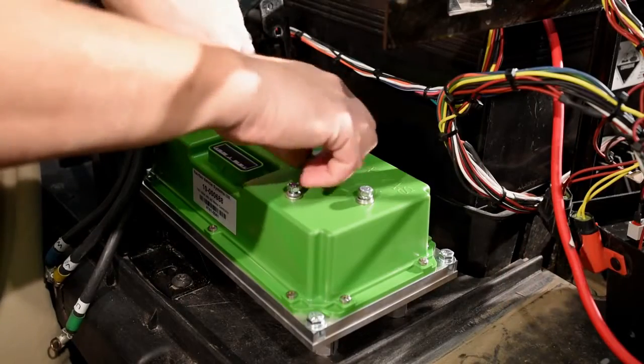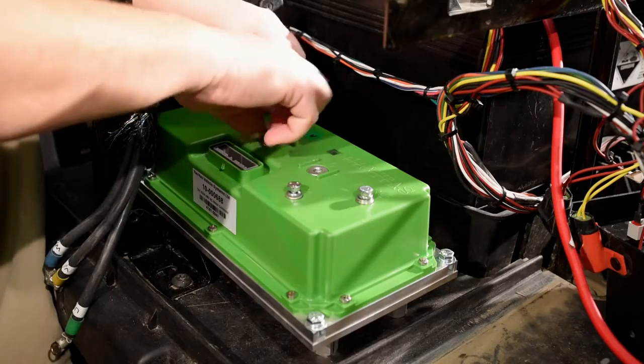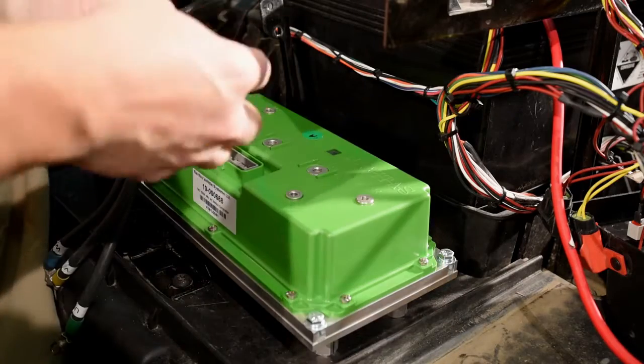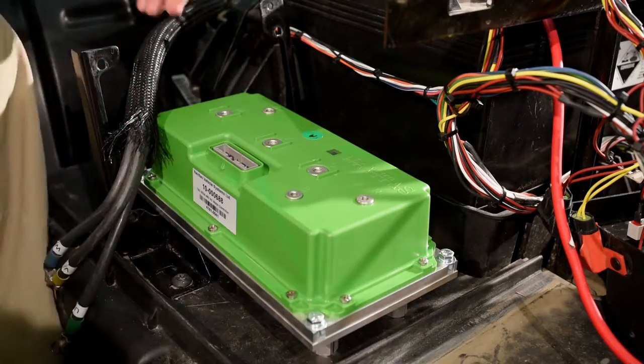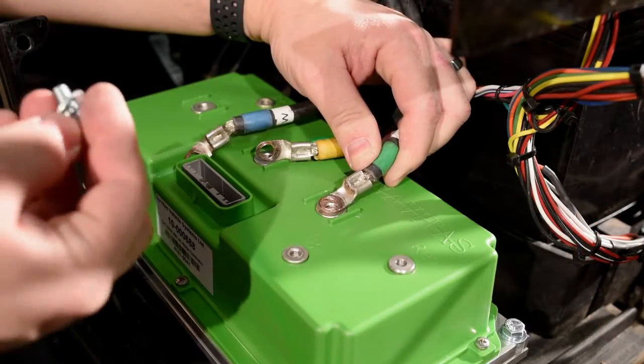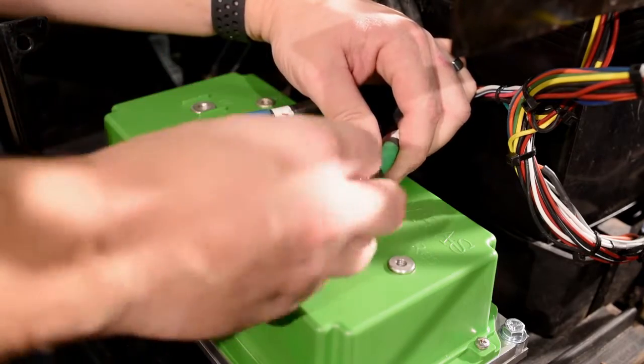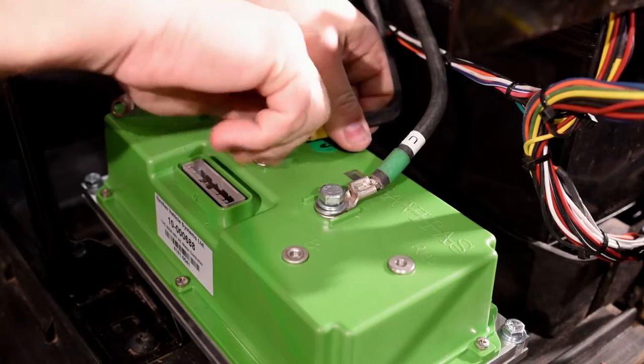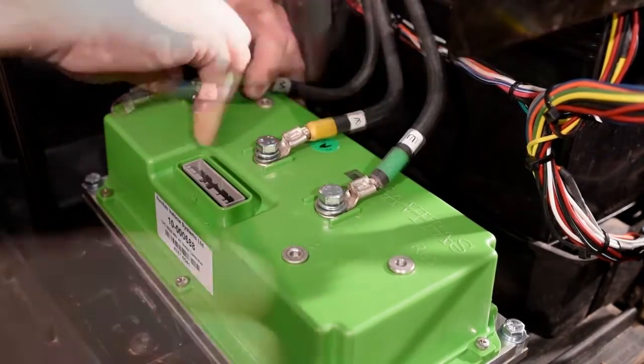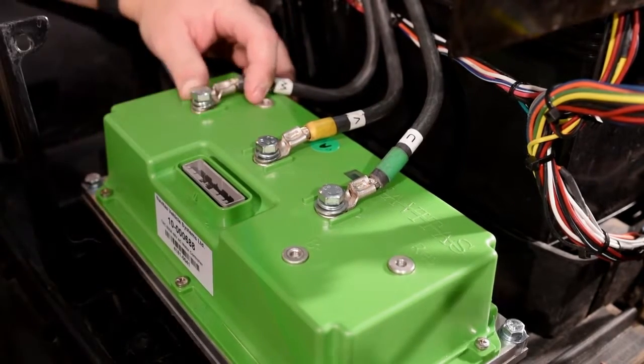Remove the bolts from the controller and connect the cables. Install U to U, V to V, W to W using the supplied bolts, washers, and lock washers. Then tighten them down.